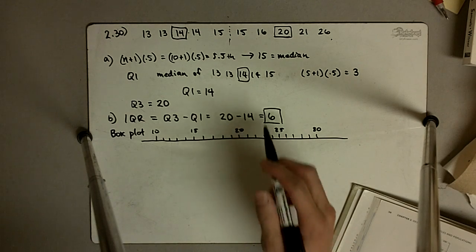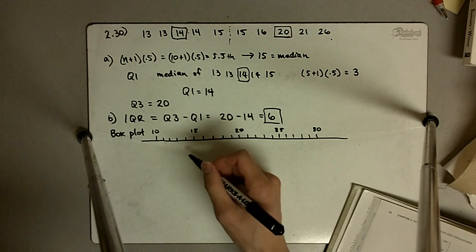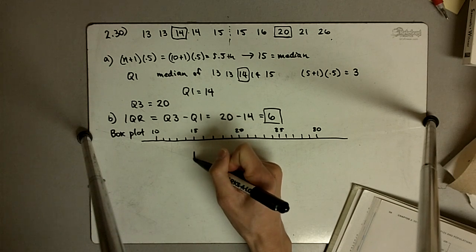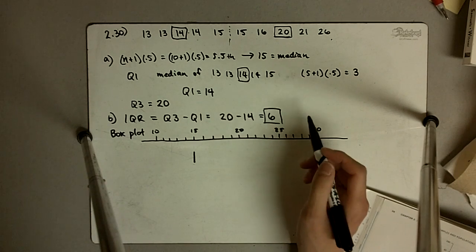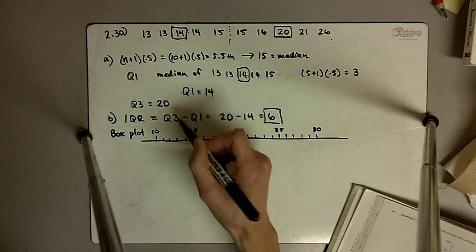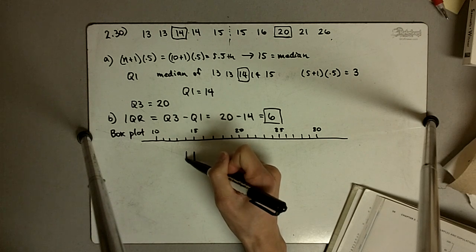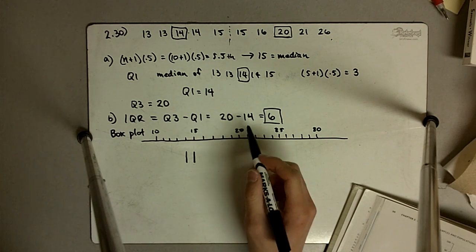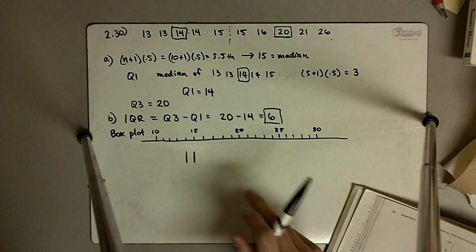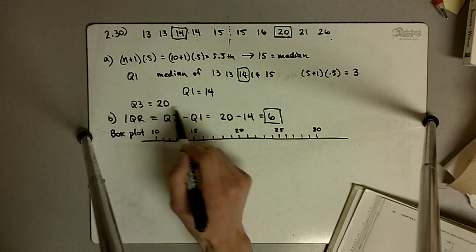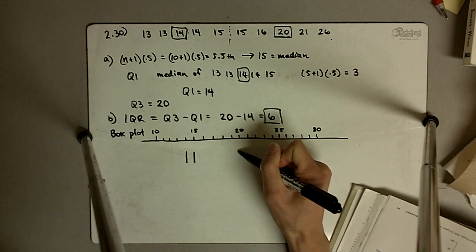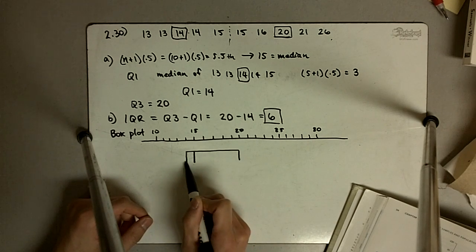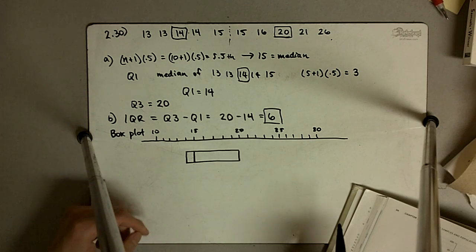So in this case, I'm going to create the box, and I'm going to start by drawing a line where we have the median. I'm going to draw another line for Q1, and that forms the left edge of the box. And Q3 is at 20, and that forms the right edge of the box. So our box looks like this.